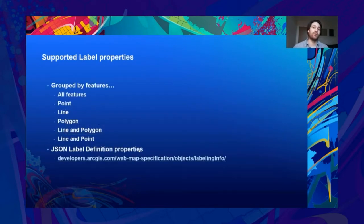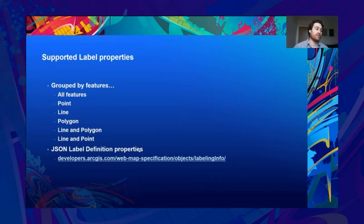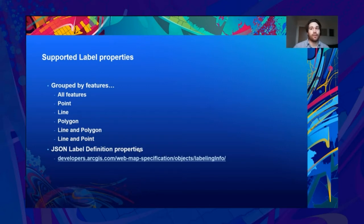Now let's take a look at all the label properties currently supported, grouped by their feature types. We've got all features, point features, line features, polygon features, line and polygon features, and line and point features. All of these label definition properties are documented at developers.arcgis.com. Please note that sometimes we're using the old name for a label definition, which is 'labeling info', but they are in fact the same.